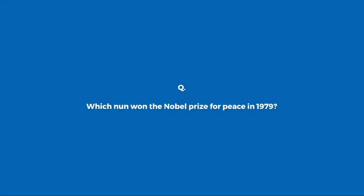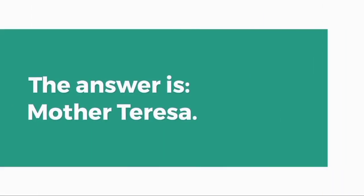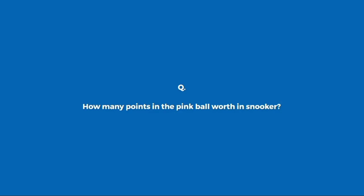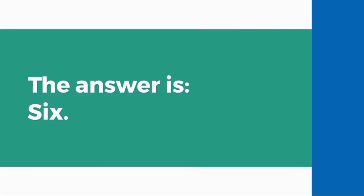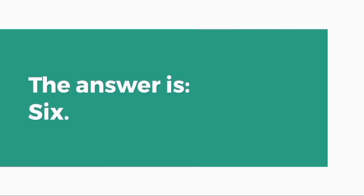Who won the Nobel Prize for Peace in 1979? Mother Teresa. How many points is the pink ball worth in snooker? Six.